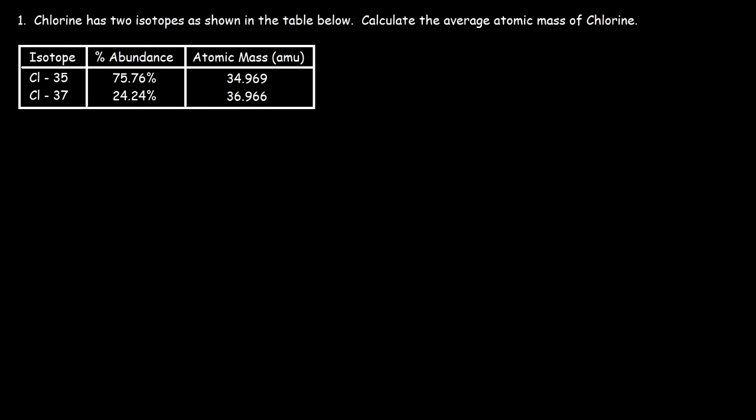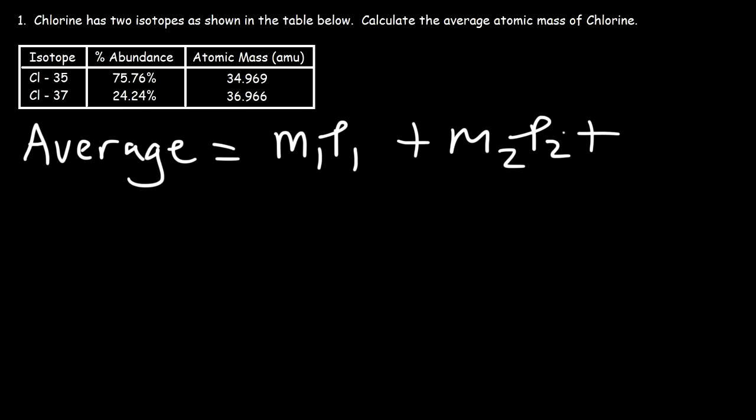Now it turns out that there's a simple formula that we need to use. The average atomic mass will be equal to the mass of the isotope times the percentage in its decimal form, plus the mass of the second isotope times the percentage. And if you have multiple isotopes this formula can continue, but since we only have two we're going to stop here.